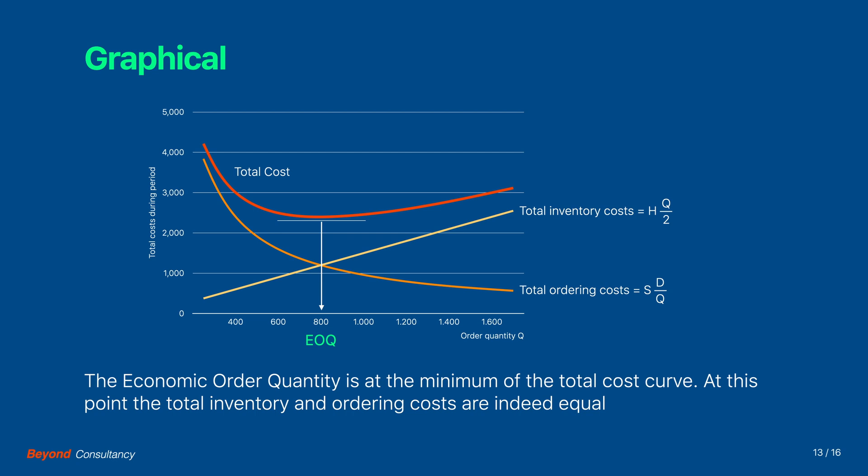We can also show the analysis graphically. The total cost function is depicted by the red curve — it is the sum of the two other curves. The yellow line depicts the total inventory costs; note that larger order quantities cause higher inventories. The orange line depicts the total ordering costs; smaller order quantities cause more orders and hence increase the total ordering costs. The minimum of the red curve determines the economic order quantity, and the graph also shows that at the minimum point the inventory and the ordering costs are indeed equal.